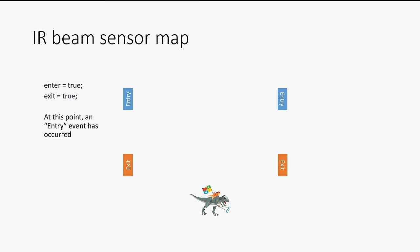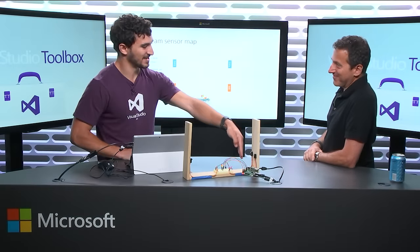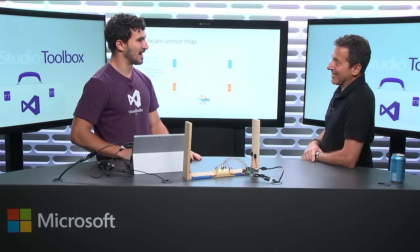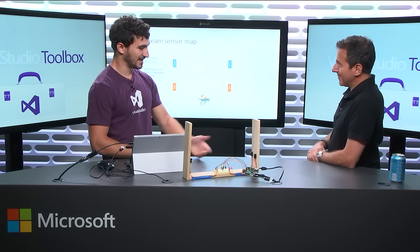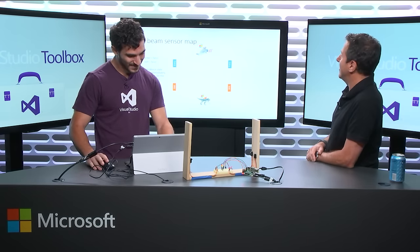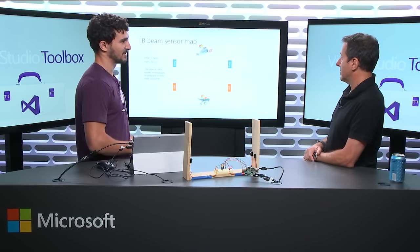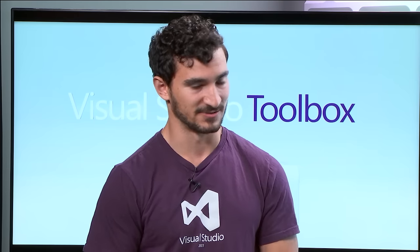If someone messes with the sensors erratically, I actually have a timeout after a couple of seconds — if nothing happens, it resets the state of the device. Another example: say a fly goes by and messes it up. If you know some simple C# programming, it's pretty easy to counteract that. As soon as the event is triggered, I immediately reset the state of the device so that when the next customer comes through, it's ready to go — it needs to respond instantly.